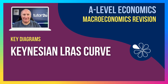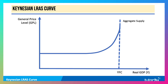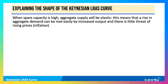Let's just spend a few minutes looking at the key diagram for the Keynesian Aggregate Supply curve. This is how it's normally drawn — it's a non-linear curve and becomes inelastic as you head towards full capacity national output. So when there's a lot of spare capacity in the economy, aggregate supply in the Keynesian model will be highly elastic.